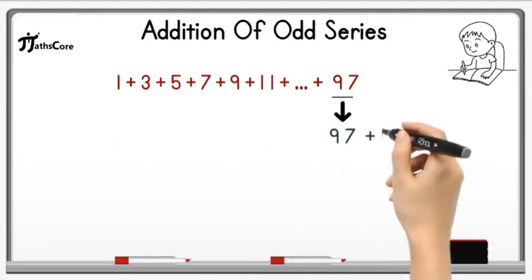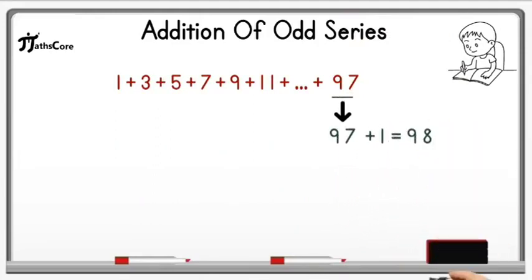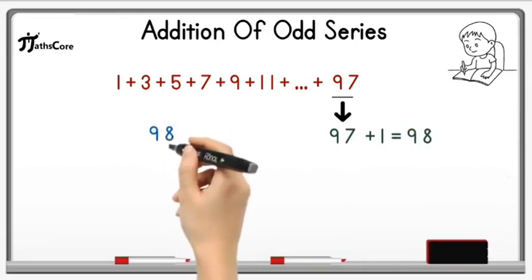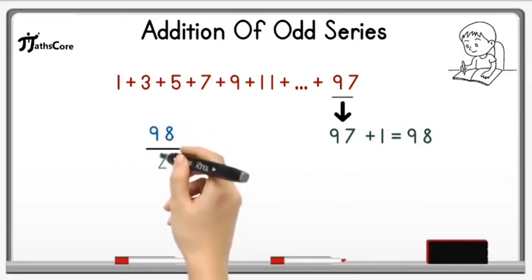Take this 97 in the next step and add 1 in it. 97 plus 1 is equal to 98. Now divide this 98 by 2 which is equal to 49.